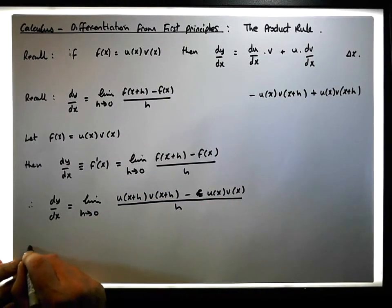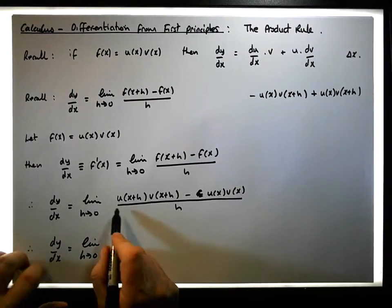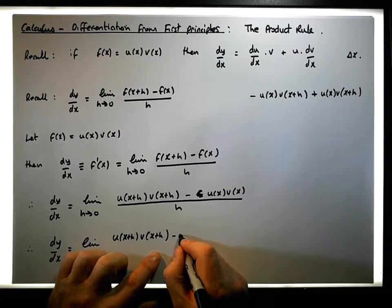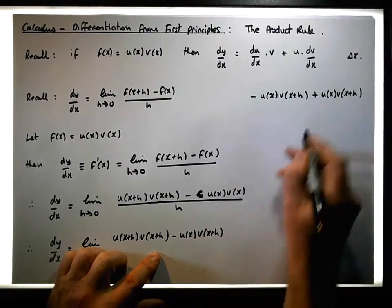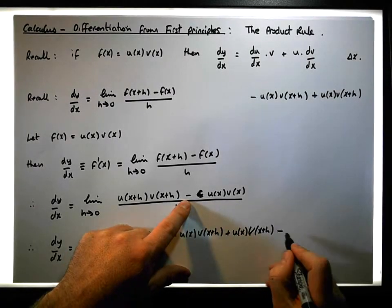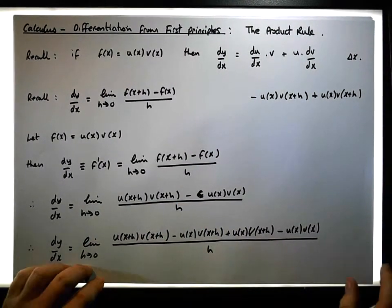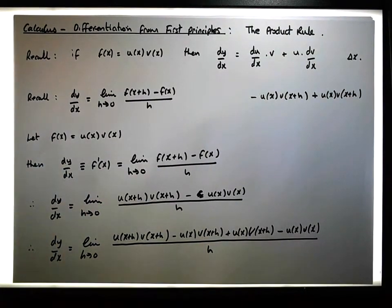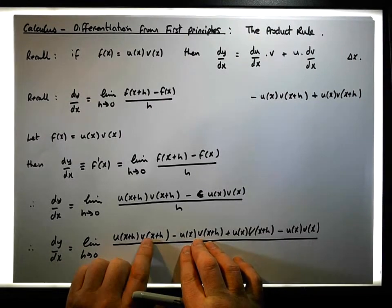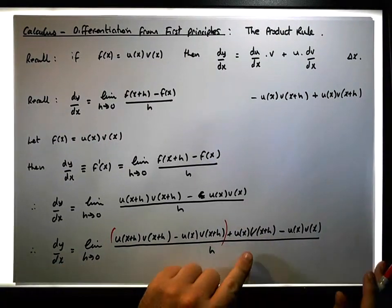Therefore, dy/dx is equal to the limit as h tends to zero of: u(x+h)·v(x+h) minus u(x)·v(x+h) plus u(x)·v(x), all divided by h. You can see that between the first and second terms, v(x+h) is common, and between the third and fourth terms, u(x) is common.